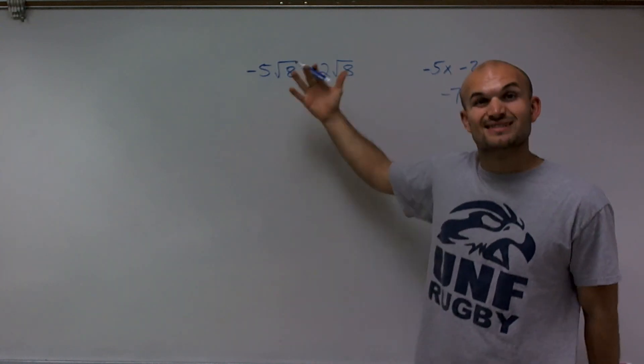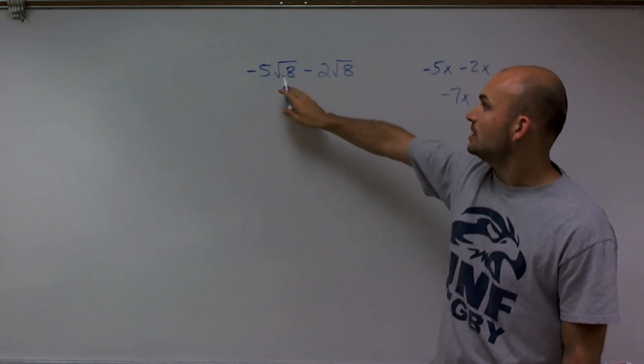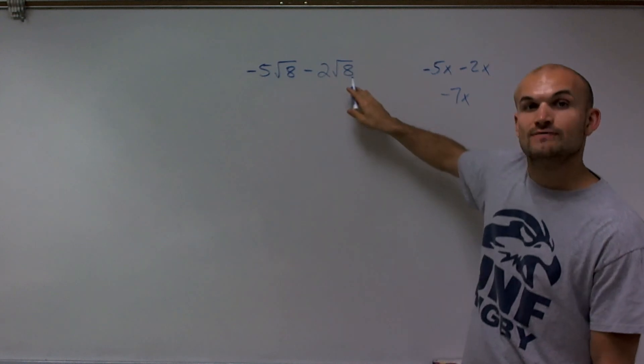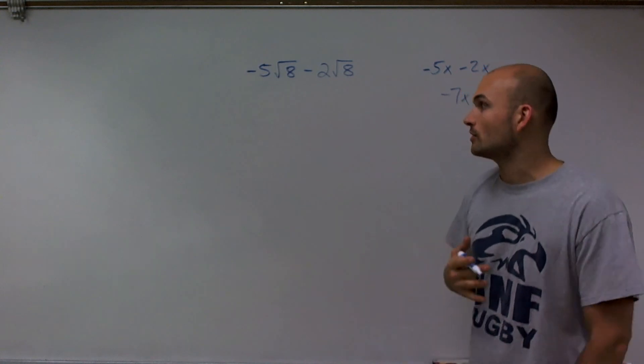When using radical expressions, it's the same thing, except now we're looking for what is in our radical or our root. We have square root of 8 and square root of 8 over here. So therefore, since they're the same, we can add and subtract them or combine.